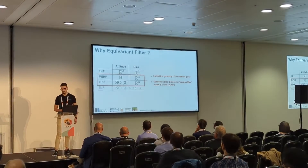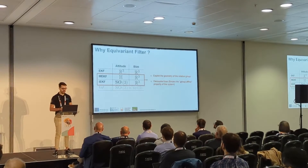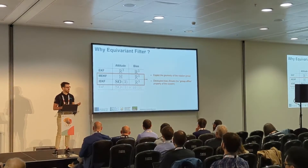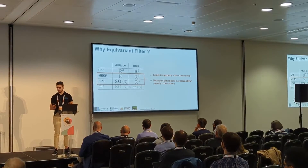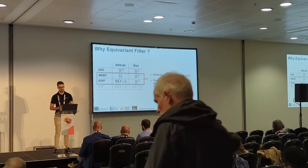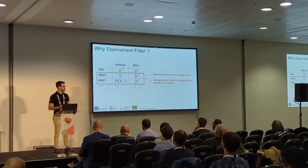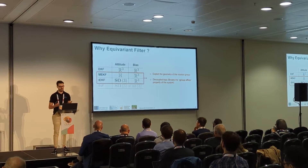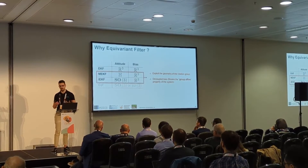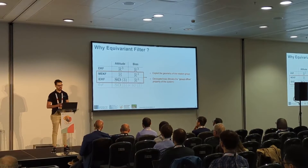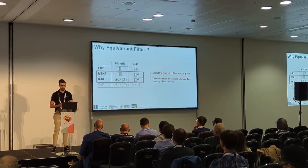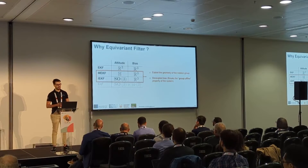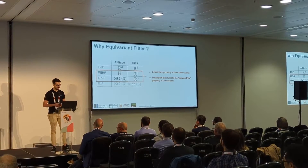Then we have the gold standard, the multiplicative extended Kalman filter, which in general are not the same filter, but they are for this example. They both exploit fundamentally the rotation group, but they keep the bias decoupled from the attitude. When biases are considered, this breaks the group-affine property of the system, basically invalidating all the advantages that come with exploiting the rotational group.